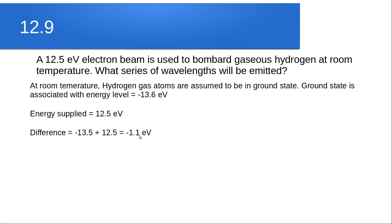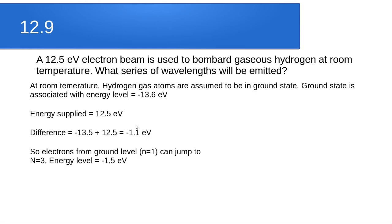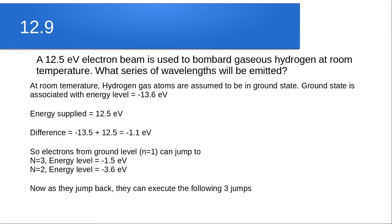The energy supplied is sufficient for electrons from the ground state to jump to the second orbit (energy ≈ −3.5 eV) or to the third orbit (energy ≈ −1.5 eV), but not to the fourth level whose energy is −0.85 eV, which is higher than the difference obtained.